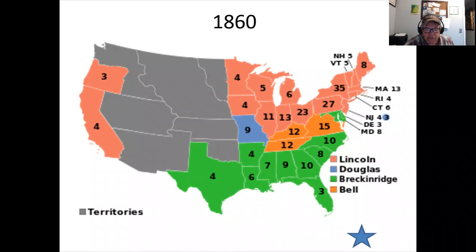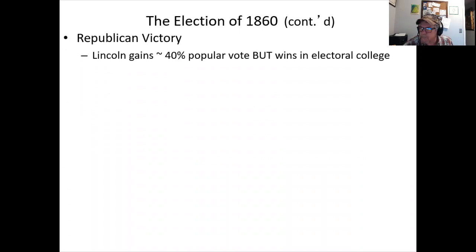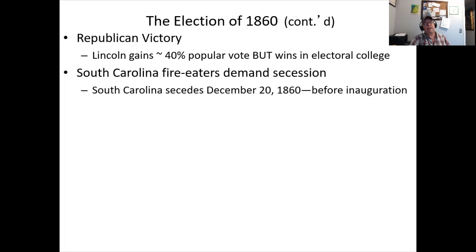The popular vote is split four ways, so Lincoln only gets about 40%, but he wins those decisive electoral states and takes the presidency. As soon as that happens the South reacts: this is their worst fears manifested. Even though Lincoln says he will not touch slavery where it exists, that's simply not enough. South Carolina leads the first seven Confederate states out of the Union — right before Christmas, then after New Year's — Mississippi, Florida, Alabama, Georgia, Louisiana, Texas.